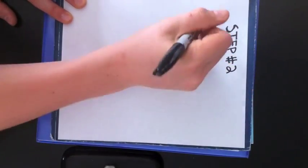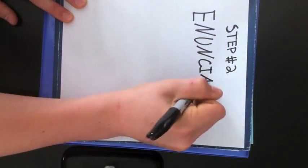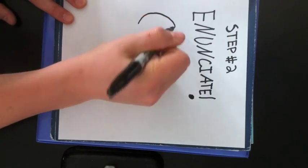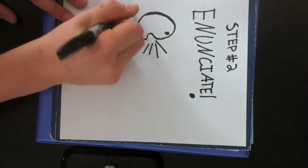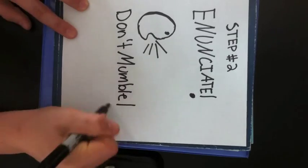Step number two, enunciate your words. Make sure everything you say is clear. Do not mumble. Use the voiceover function in a quiet place to help you do this.